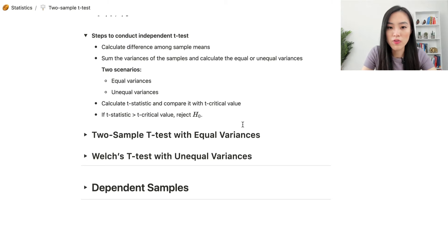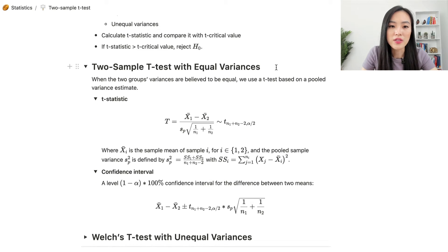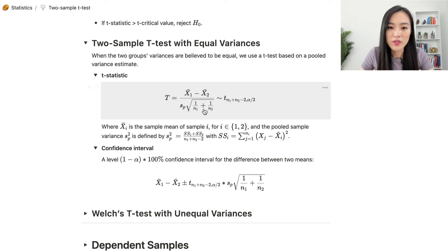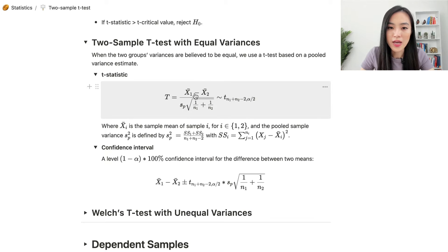Now let's look at two-sample t-tests with equal variances. When the two groups' variances are believed to be equal, we use a t-test based on a pooled variance estimate. The test statistic is x1-bar minus x2-bar, divided by sp times the square root of (1/n1 + 1/n2).